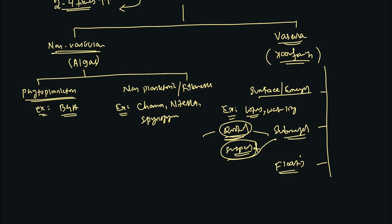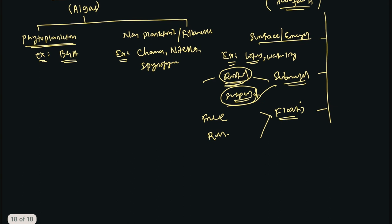The third type is floating aquatic weed, where roots are not in contact with soil and both roots and leaves are freely floating over the water body. Free-floating examples are Eichhornia crassipes, Pistia stratiotes, and Salvinia molesta. Rooted floating examples include Nymphaea.